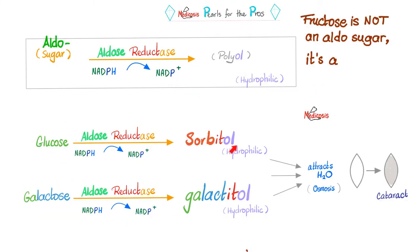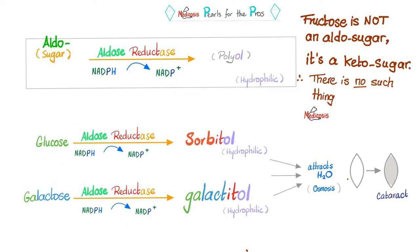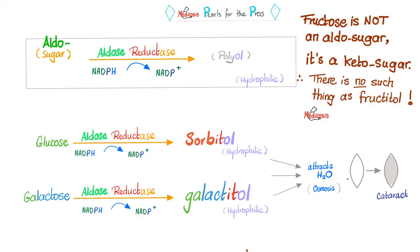Glucose can become sorbitol, and galactose can become galactitol. Here is the formula: a sugar, specifically an aldose sugar — a sugar with an aldehyde group — by an aldose reductase, that sugar will be reduced into a polyol such as sorbitol and galactitol. Is alcohol water soluble or lipid soluble? Water soluble, of course. That's why some people can drink alcohol.